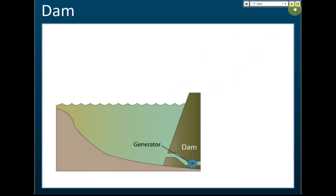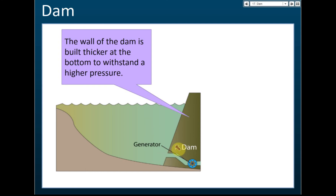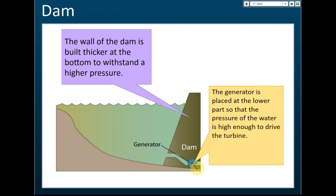The first application of liquid pressure is dam building. The lower part of a dam is built thicker compared to the upper part. That is because the lower part needs to withstand a higher pressure — the deeper into the water, the higher the pressure. So the higher the pressure, the thicker the dam wall needs to be.